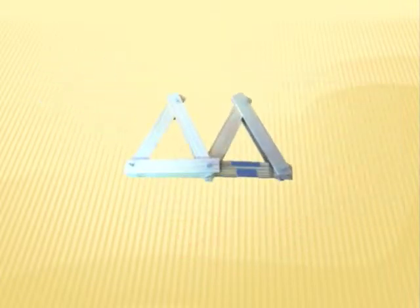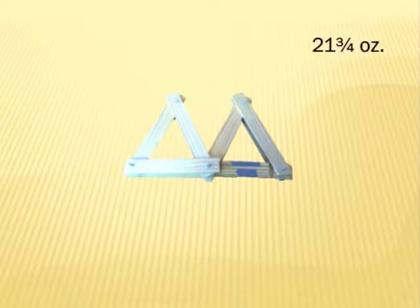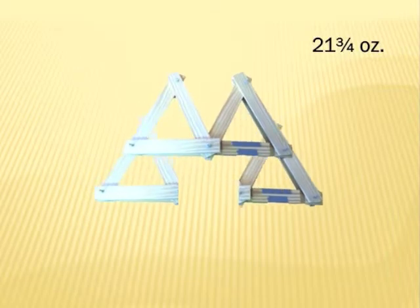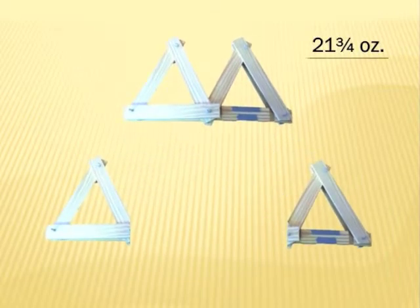To make my truss weightless, I weighed it. It turned out to be 21 3/4 ounces. Then, I had to figure out how much of that weight was being placed on the node where my load was. I did this by dividing the truss in half, making each side weigh 10 7/8 ounces.